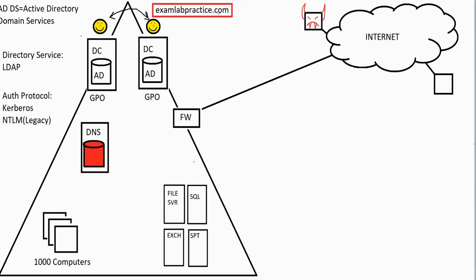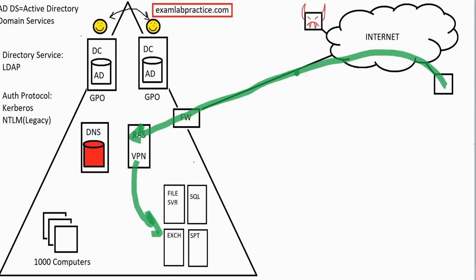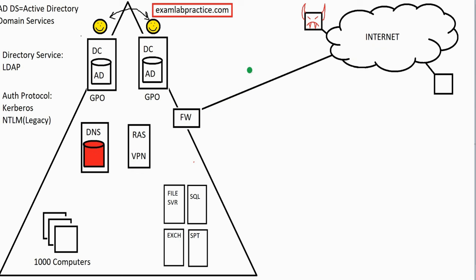Usually the way you would secure remote access is to use a VPN — a virtual private network. You could purchase a VPN concentrator, or in the Microsoft world, you could set up a RAS server, also known as RRAS — Routing and Remote Access Services. This allows a VPN tunnel to be created: encrypted communications that go through to that RAS server. From there, the RAS server allows you to access other resources securely. The hacker cannot see the traffic flowing through because it's all encrypted.